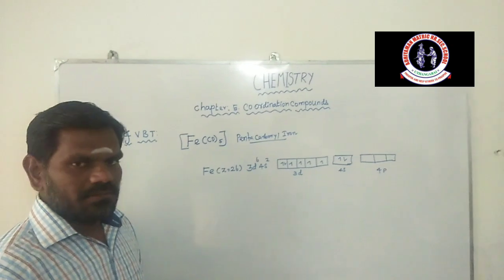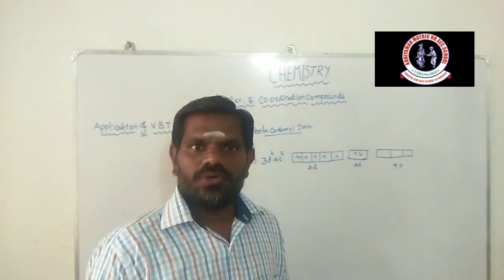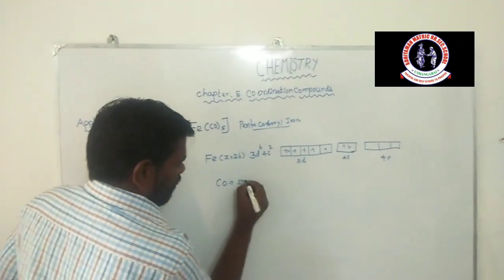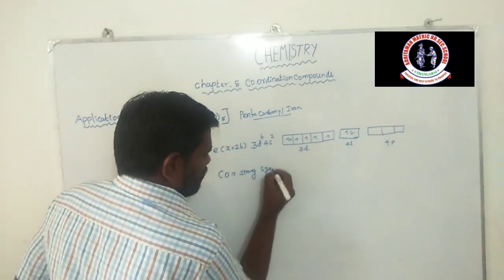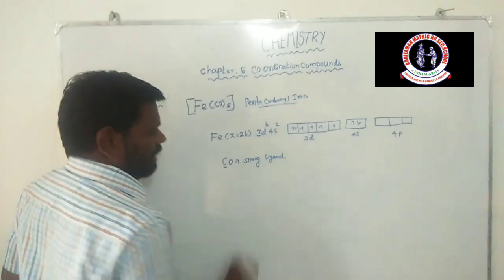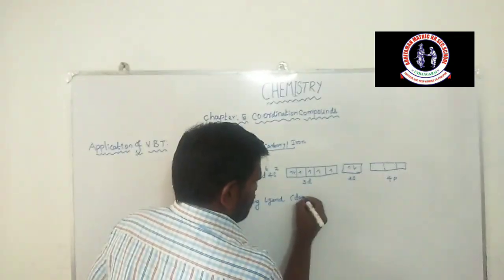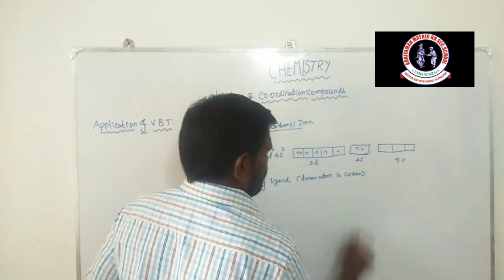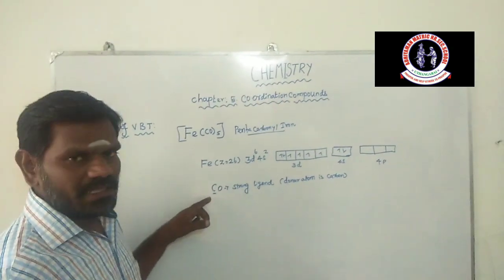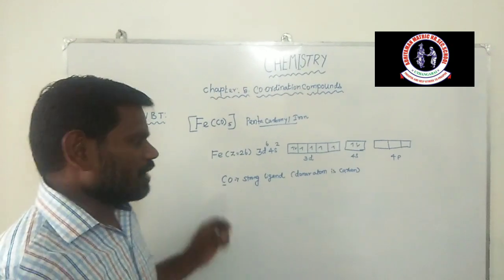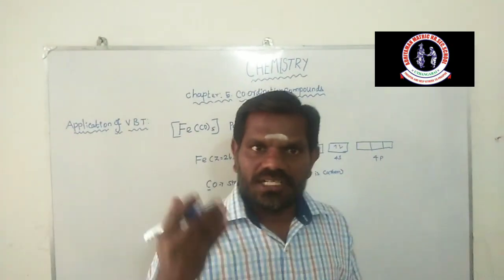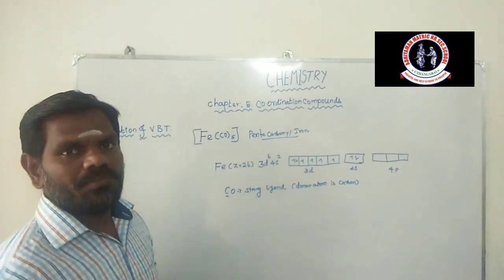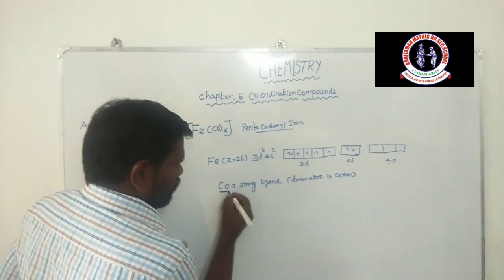We already know that the carbonyl group is a strong field ligand. The carbonyl group is a strong ligand because the donor atom is carbon. Carbon, nitrogen, and phosphorus are all strong field ligands. Whenever strong field ligands are present, unpaired electrons in the central metal atom undergo pairing. Carbonyl is a strong field ligand.